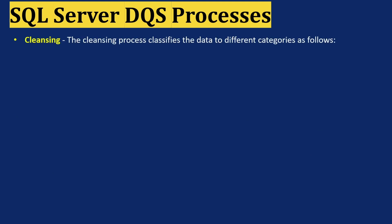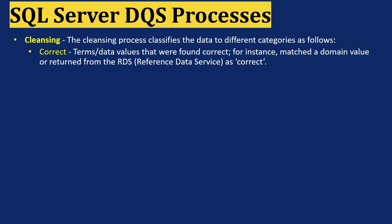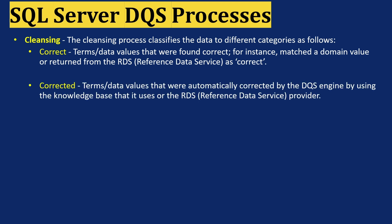The data cleansing process classifies data into different categories. First is Correct: terms or data values that were found correct — for instance, a match to a domain value or from the reference data source. Second is Corrected: terms or data values that were automatically corrected by the DQS engine using the knowledge base or the reference data provider.